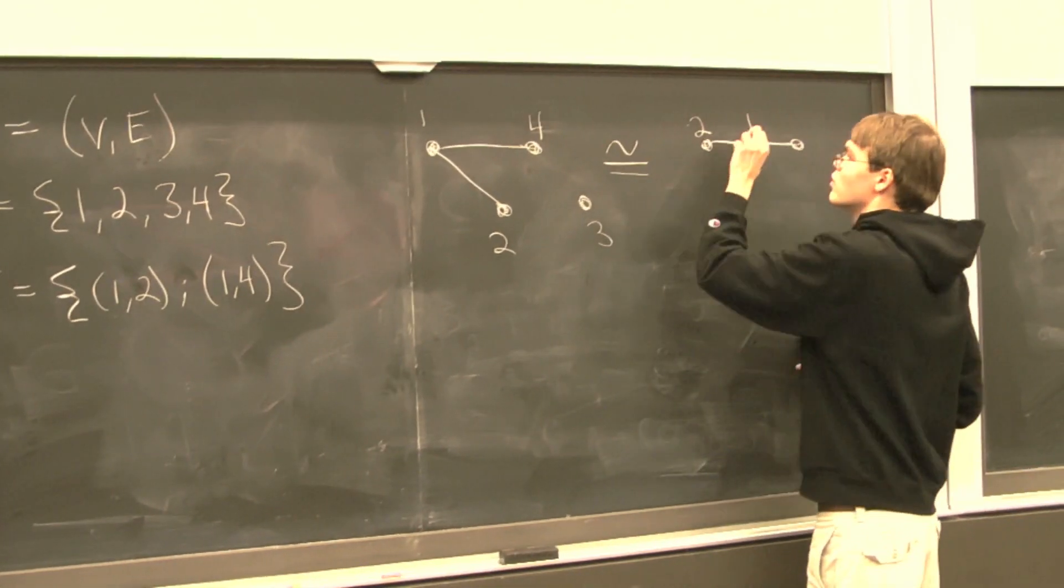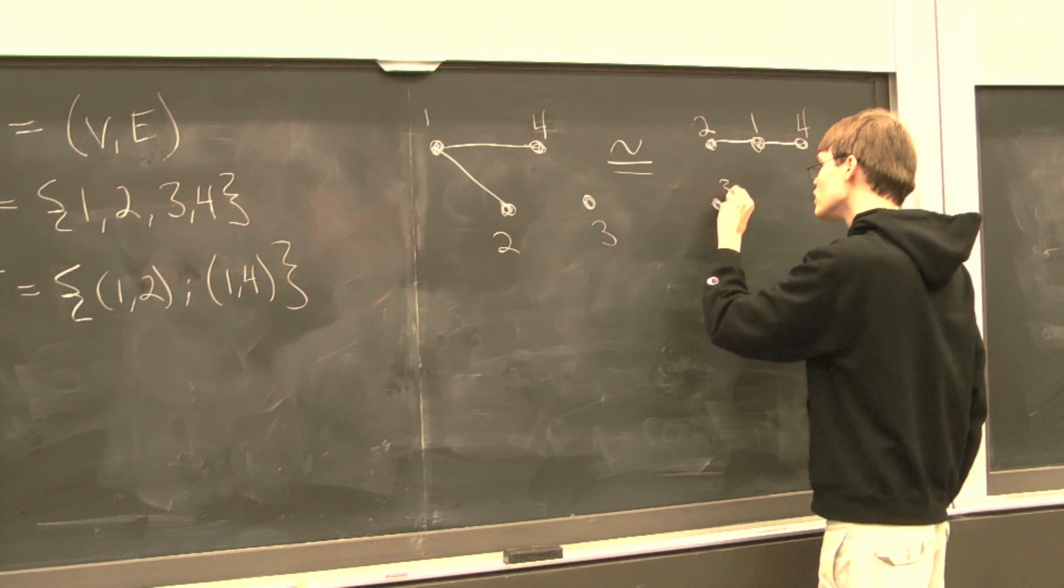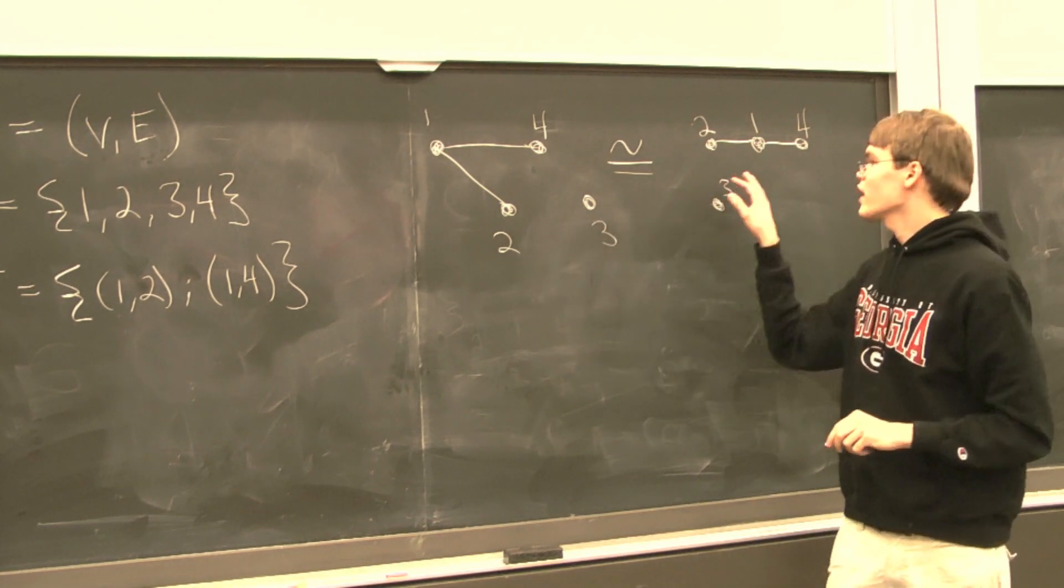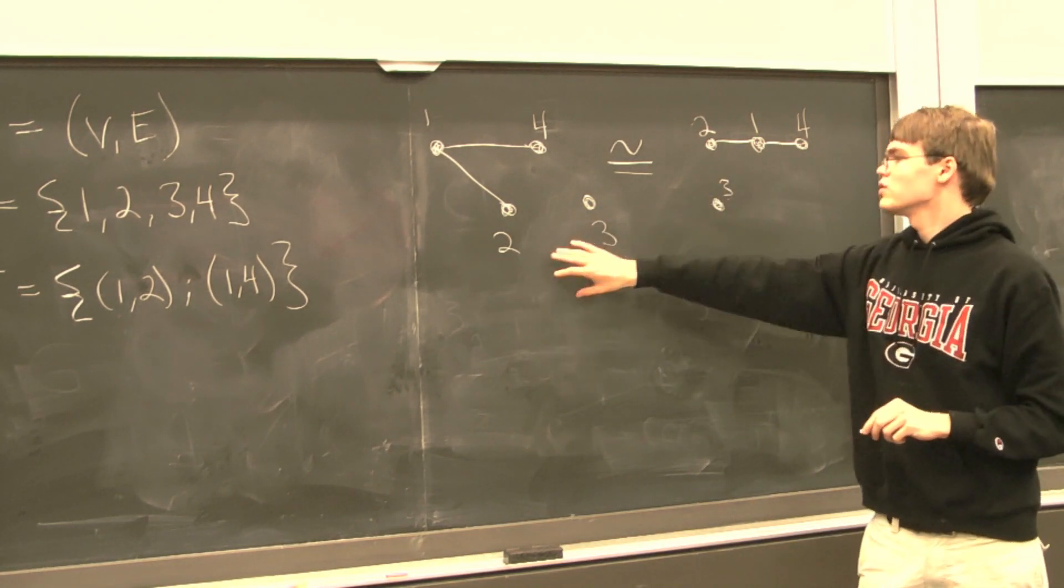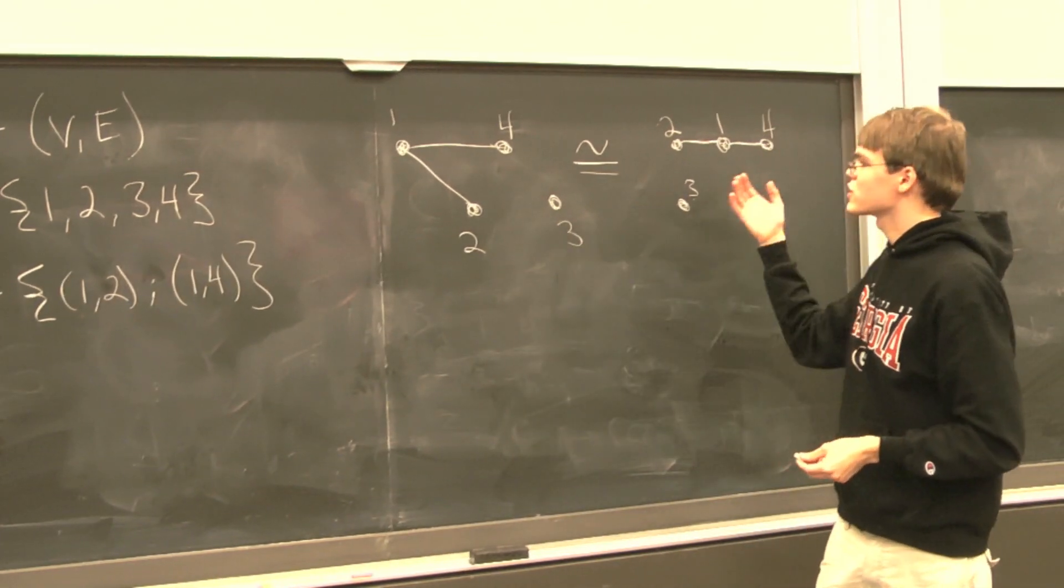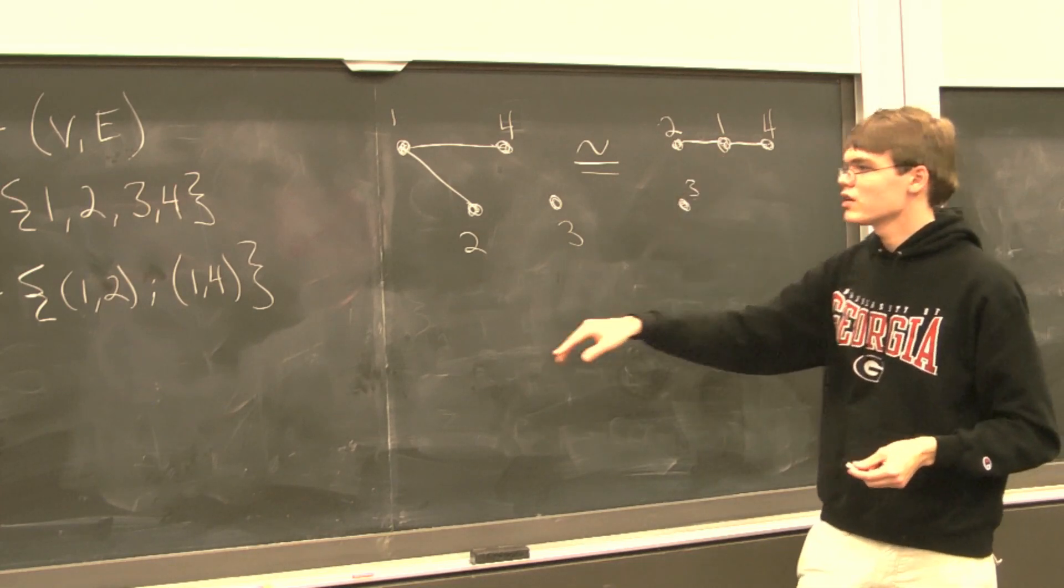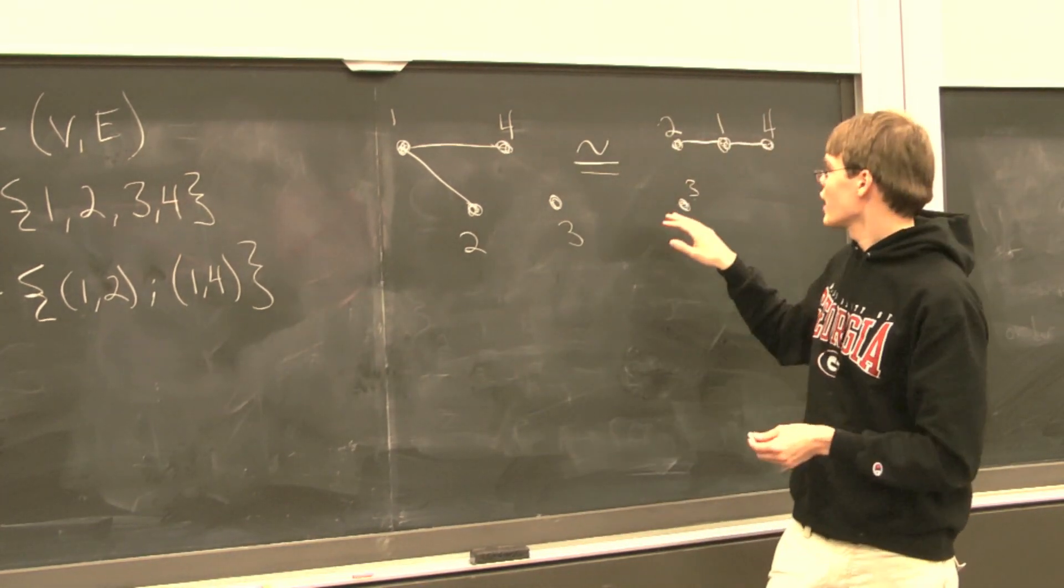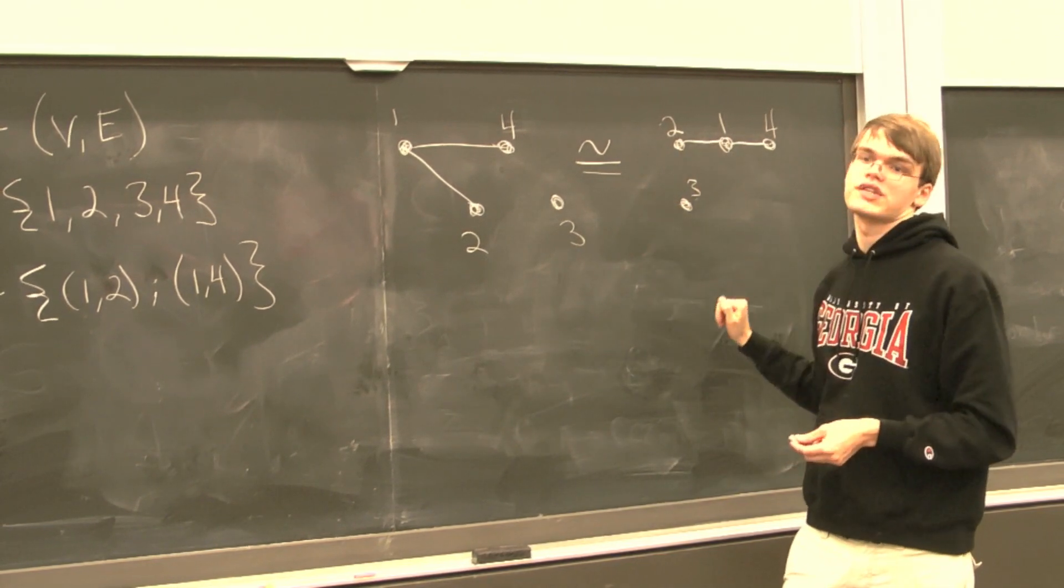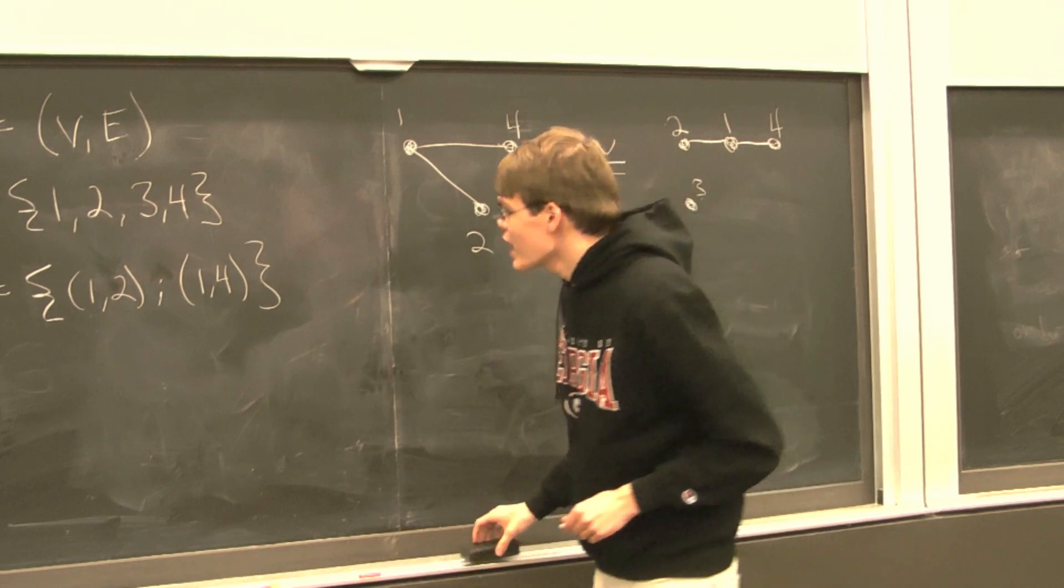So we have 2, 1, 4, and then maybe 3 down here. Yes, they've been arranged differently in these two depictions, but they're essentially the same. Edges exist between each pair of points as it should, and every vertex is represented.